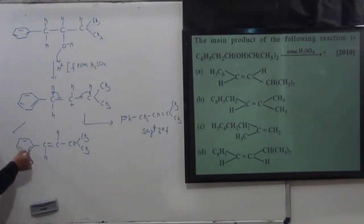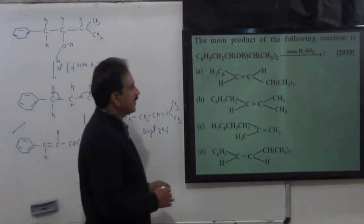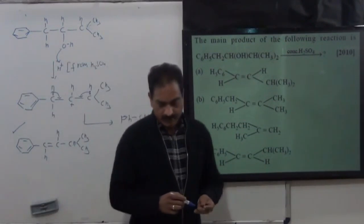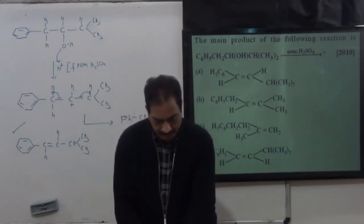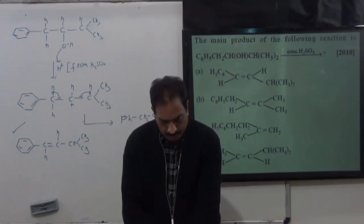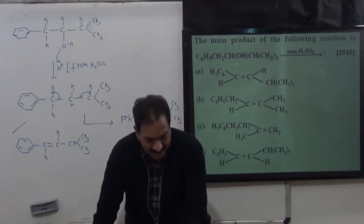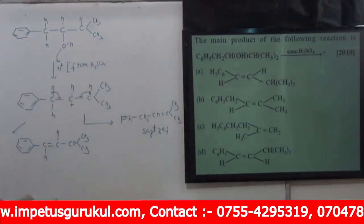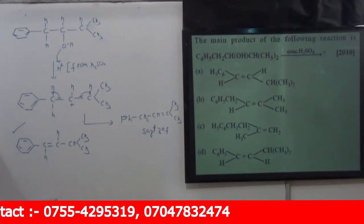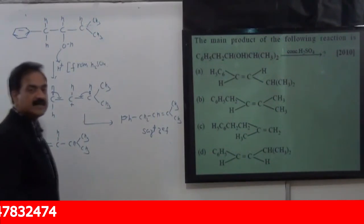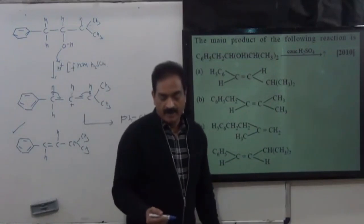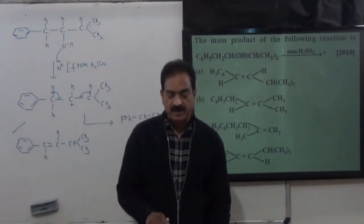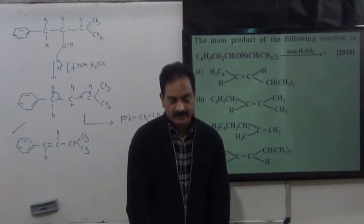This is not the major product because there are not more branches adjacent. This is the major product because this double bond is in conjugation with the benzene ring. So correct answer is the first option. Trans alkene is also given, so trans is major because trans alkenes are thermally more stable. So trans is the correct answer, the first option.